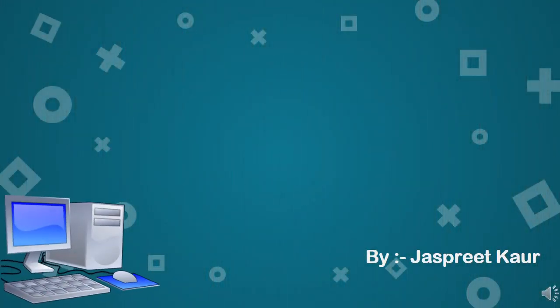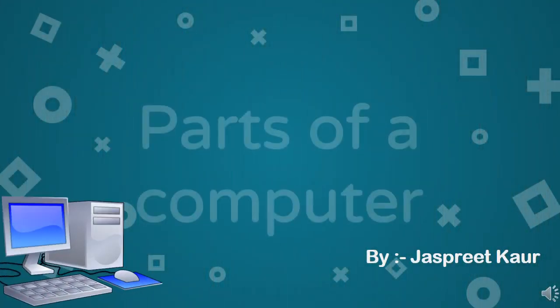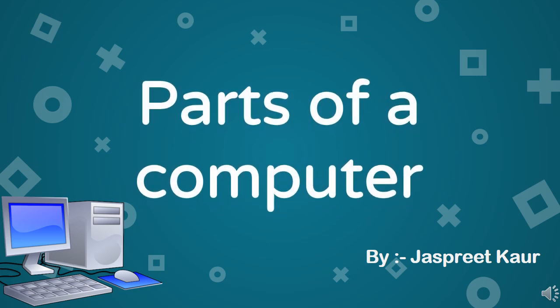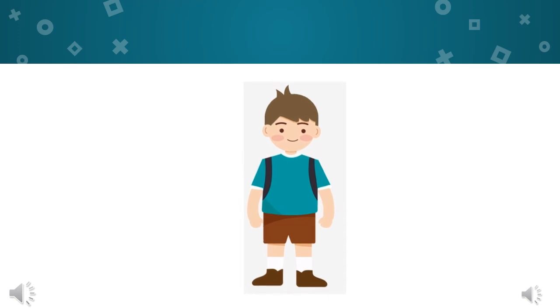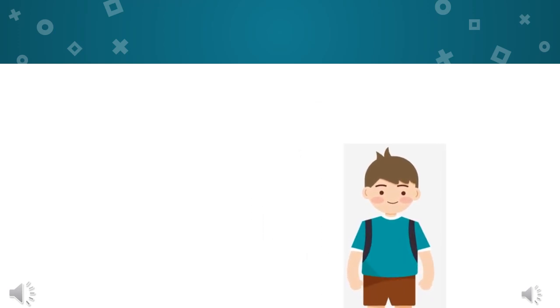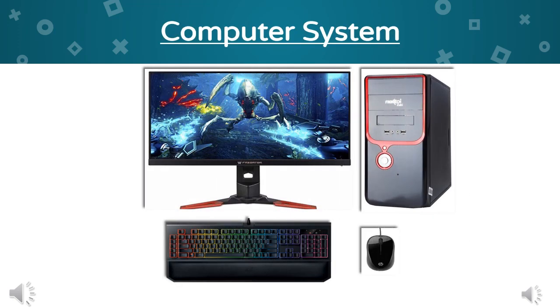Hello children, today we are going to learn about parts of a computer. As we know, a human body is made up of various parts like eyes, nose, ears, hands and legs. Similarly, a computer is also made up of various parts. All these parts together make a computer work. Now let us learn about the different parts of a computer.